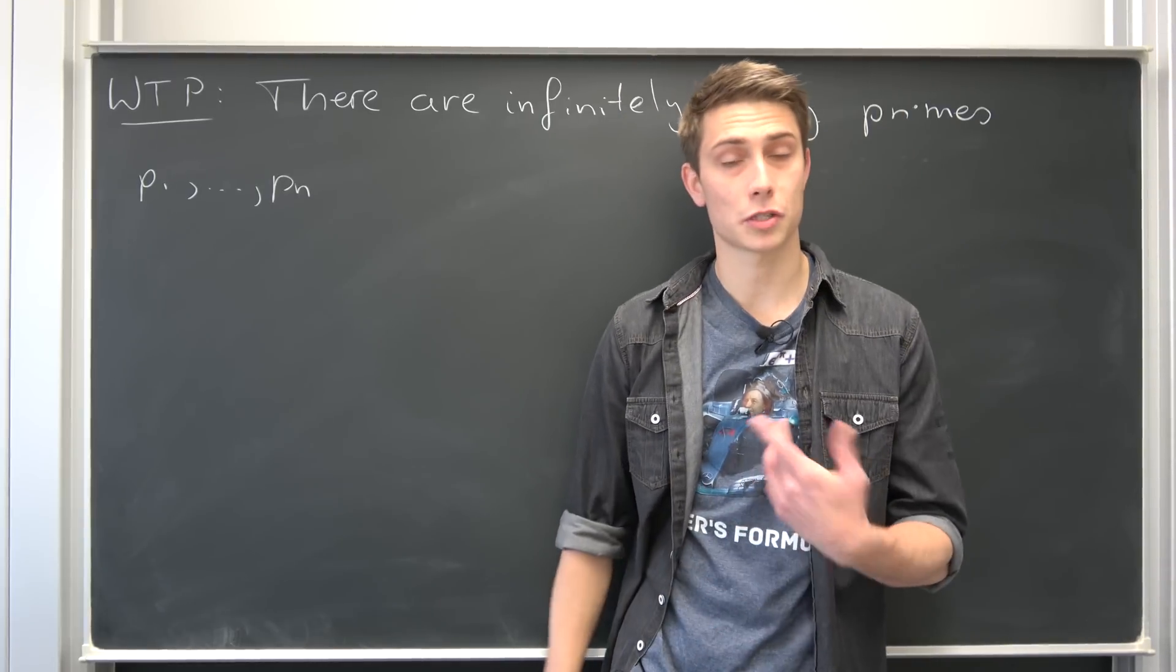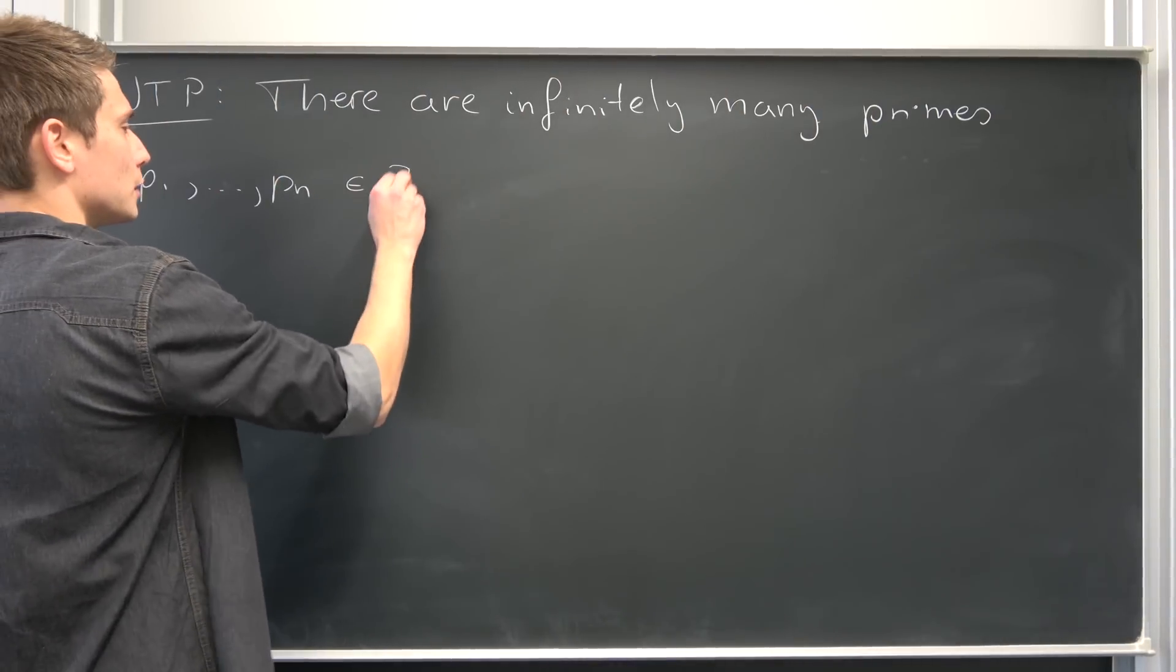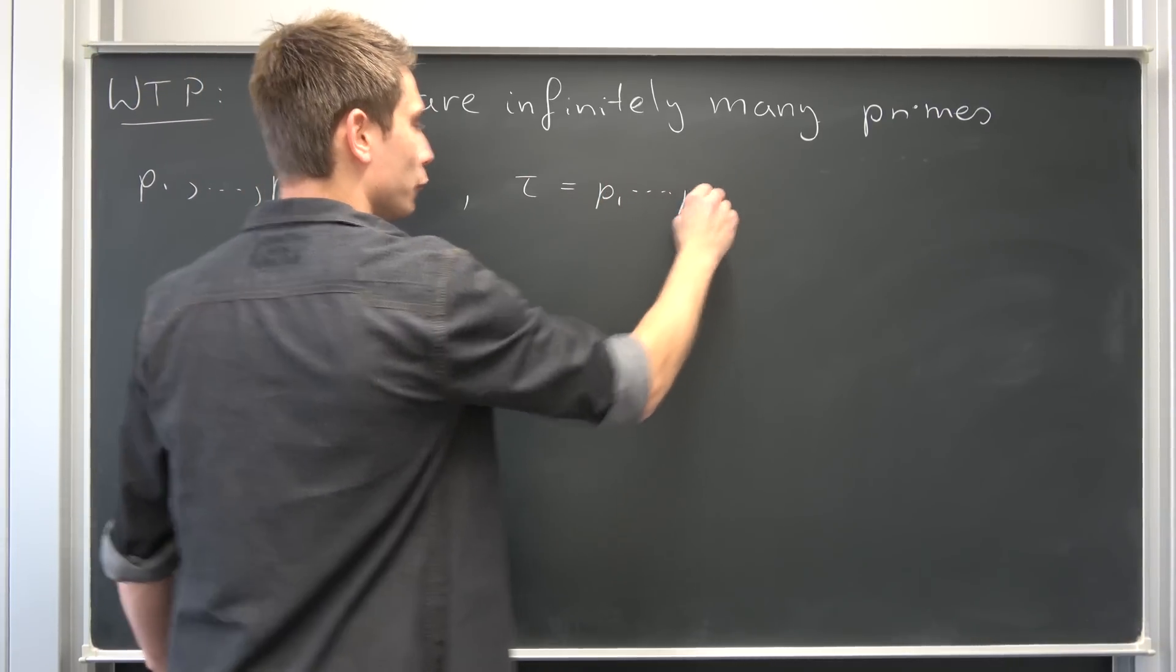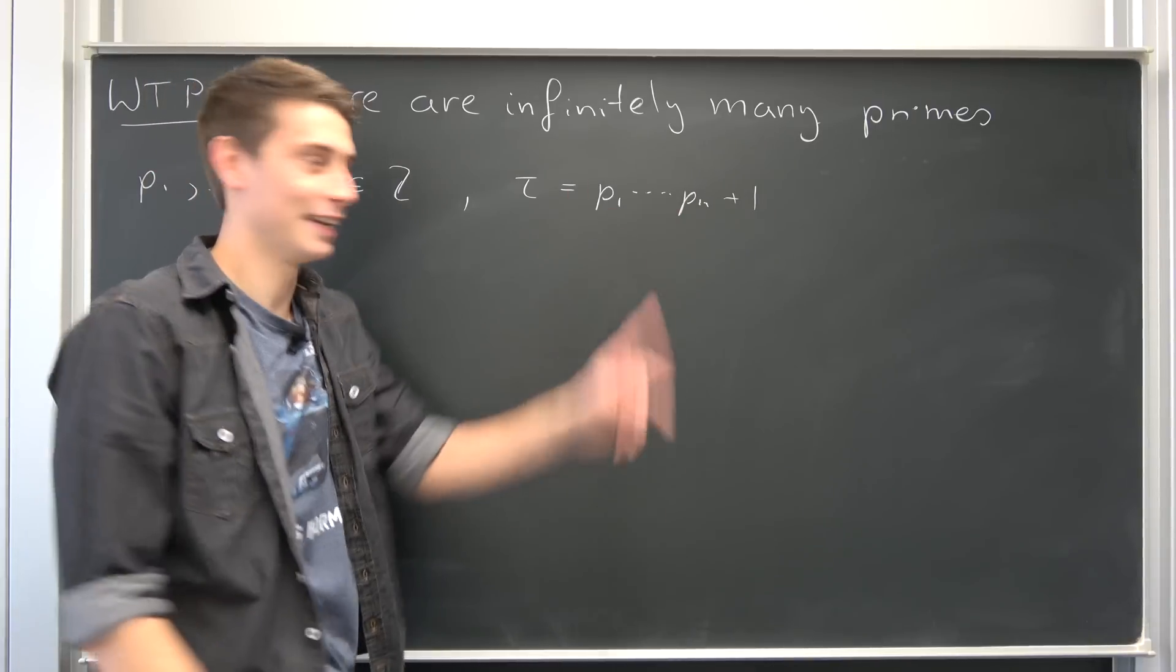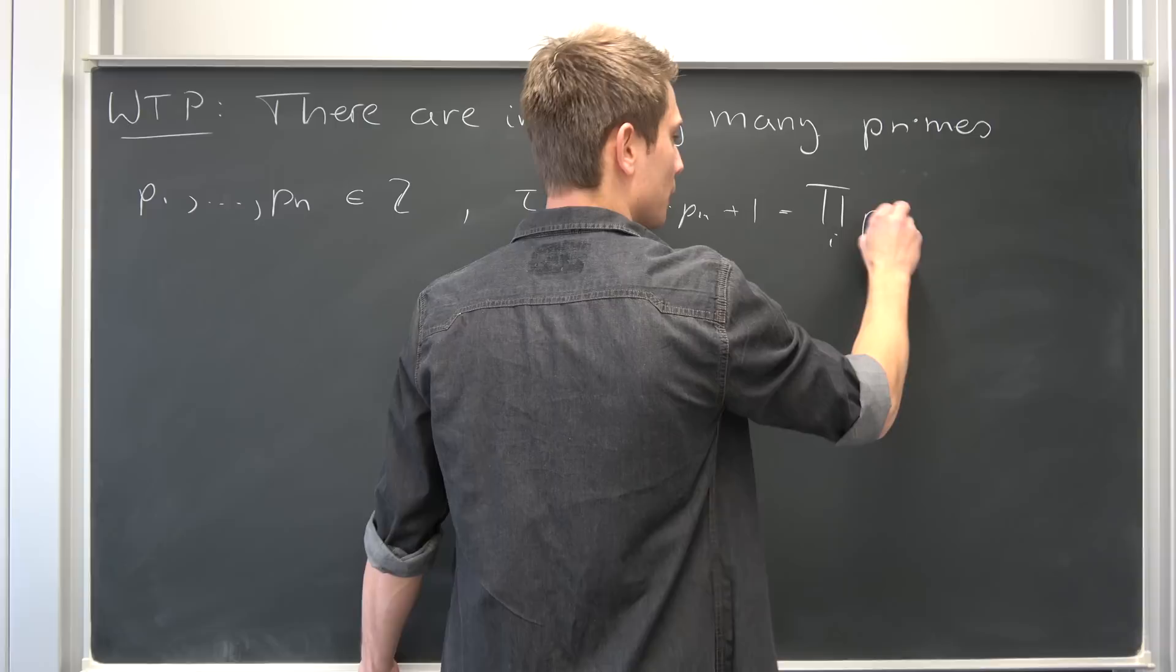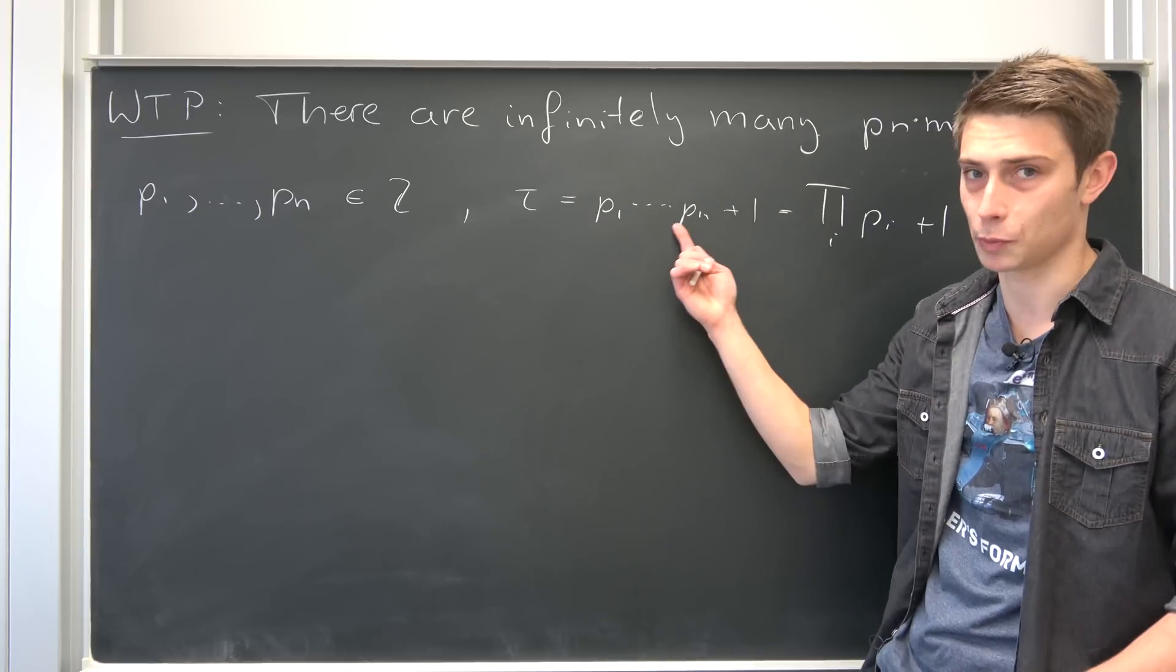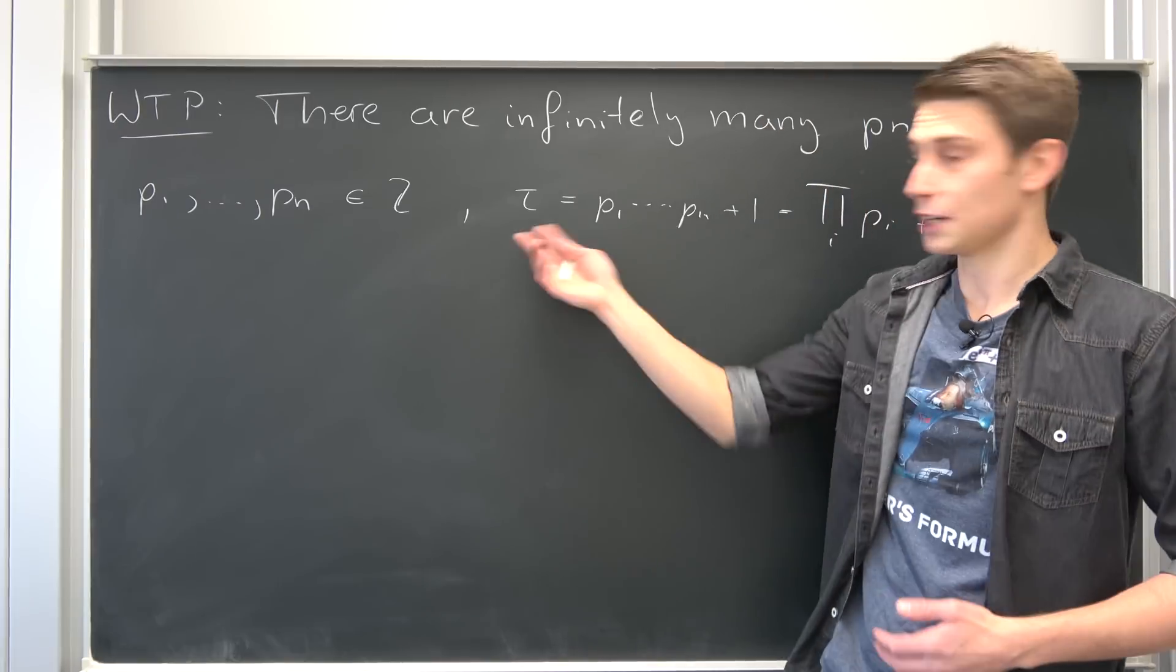And we are going to construct ourselves a new number. Those are elements of the integers, natural numbers, whatsoever. And we are going to take a look at, let's choose something nice: tau, for example. Tau being nothing but the product of all the finitely many primes we have, plus one. You see, we can rewrite this using the pi notation plus one. So this right here is just the same. We have constructed ourselves a new number which is obviously element of the integers because integers are closed under multiplication, and they are closed under addition.